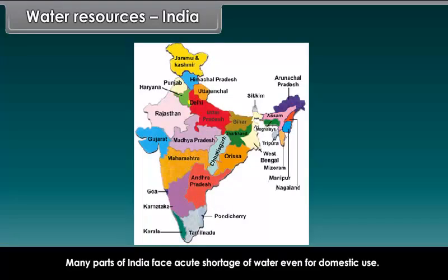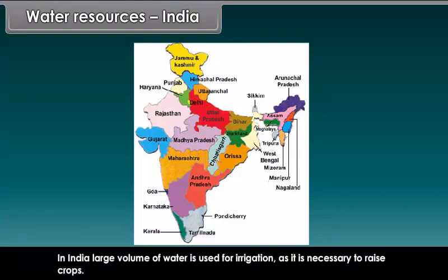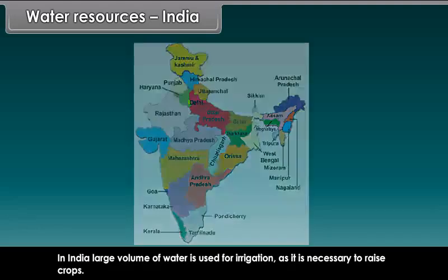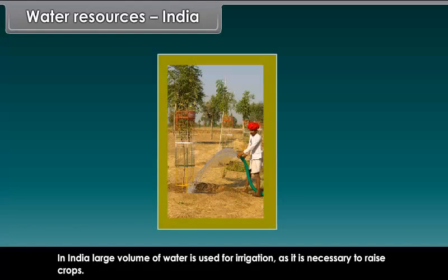Many parts of India face acute shortage of water, even for domestic use. In India, large volumes of water are used for irrigation, as it is necessary to raise crops.